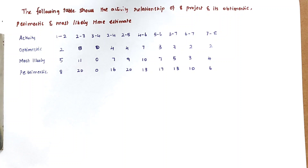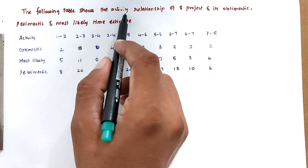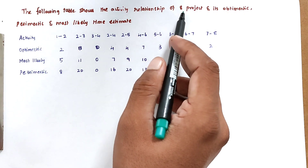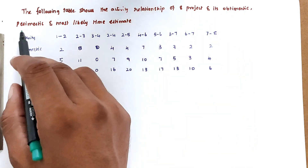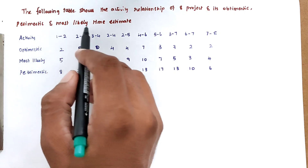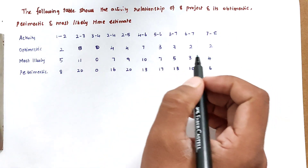Hello friends, welcome to Civil Engineering Exam. Today we are going to see a problem related to construction planning and scheduling in the topic of PERT — that is, Program Evaluation Review Technique. The problem involves a table showing the activity relationships of eight project activities with their optimistic, pessimistic, and most likely time estimates.